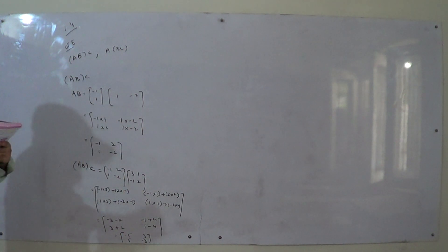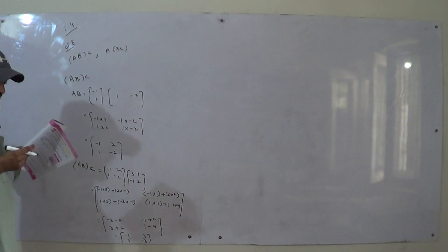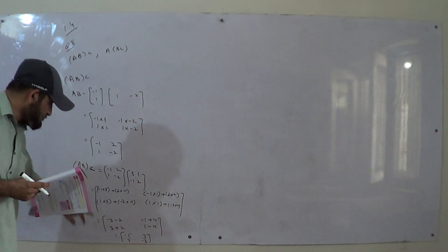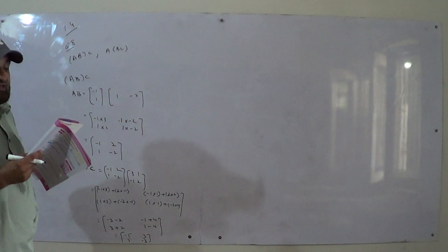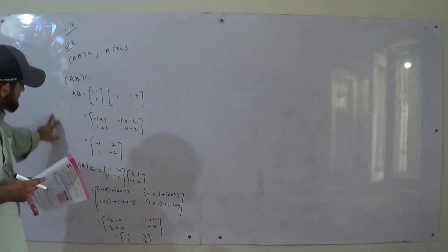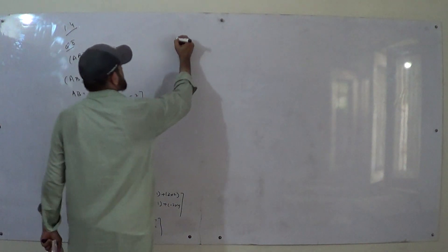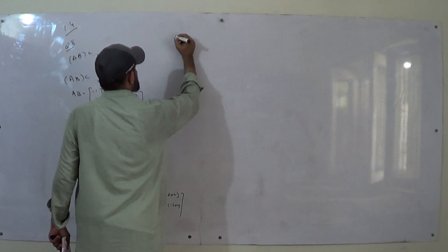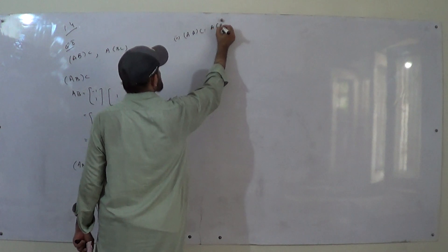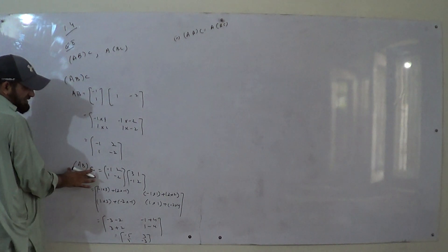In the first part, A(BC) and (AB)C — we determine whether they are equal. Both are equal. The second part is also equal. We find A(BC) by first finding BC and then multiplying by A, same as the other side where we find AB first and then multiply by C.